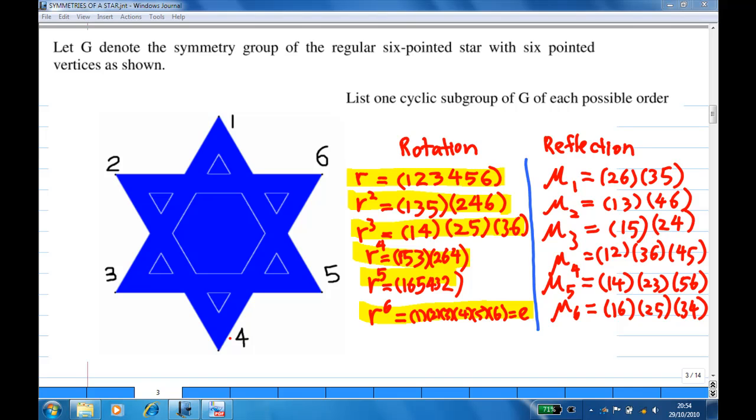We are going to list one cyclic subgroup of G of each possible order. First of all, the symmetry group G consists of 6 rotations and 6 reflections as listed on the table in our earlier solution.